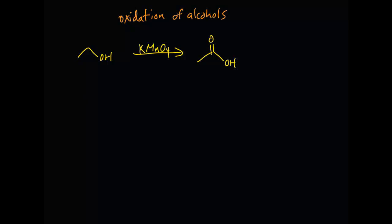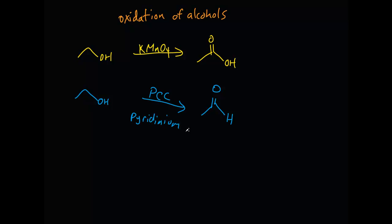But if you take that same primary alcohol and you don't want to oxidize it all the way to the carboxylic acid — you want to stop at the aldehyde — you would use something called PCC. PCC stands for pyridinium chlorochromate. We need to give credit to the famous organic chemist from Harvard, C.J. Corey, who developed this method in 1975. So, if you use KMnO4 you oxidize the primary alcohol all the way to the carboxylic acid, but if you want to stop at the aldehyde, use PCC.